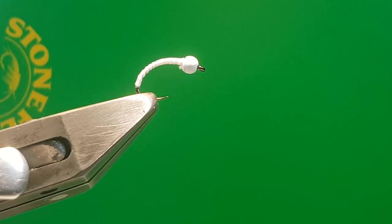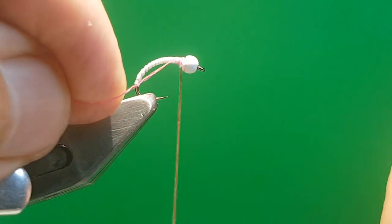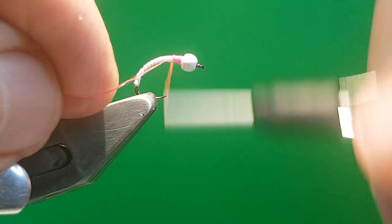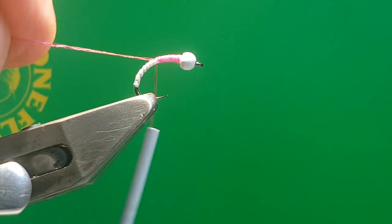Next thing is Viva's Body Quill, a kind of fluo pink color. This stuff is great. I use it in olive brown, yellow for all my dries. It gives a really nice shiny body and you can keep it very thin. It's got a cracking color, cracking shine. It's just lovely stuff to work with.